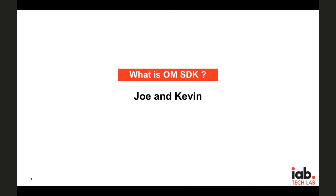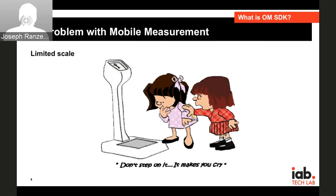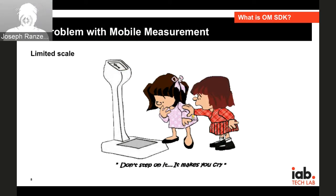The inability to measure at scale with true independent third-party measurement for viewability has been one of the most commonly cited inhibitors of brand spend for mobile and app advertising. That is basically the chief problem we set out to solve — to ensure that an advertiser will be able to run a tag and measure viewability and further verification across all of their ad spend at scale, chiefly for mobile app.